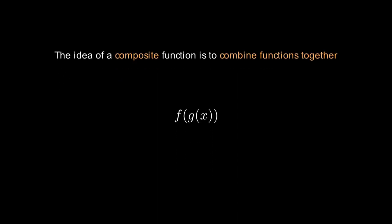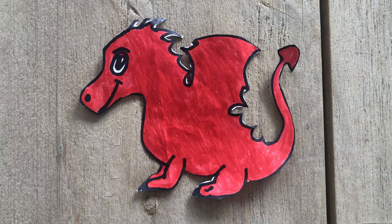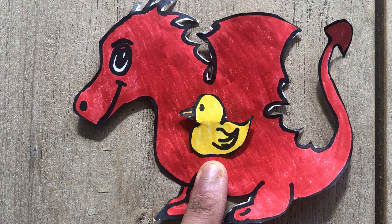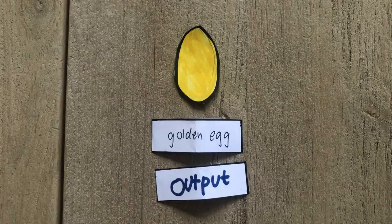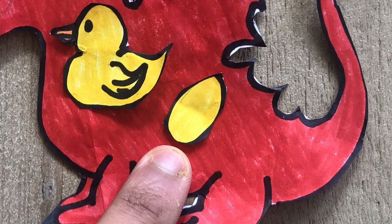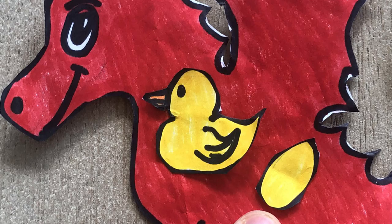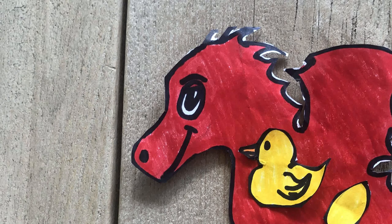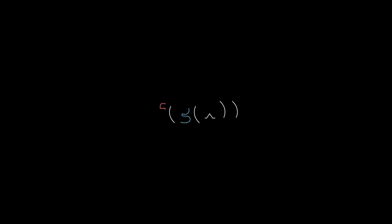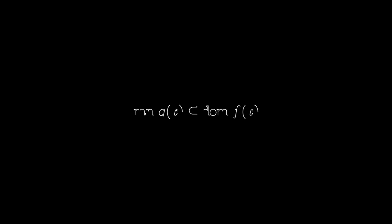We write a composite function like so, where we have some function g(x) inside another function f(x). But you might be asking: what if our dragon cannot digest the duck's eggs? Well, then the duckagon cannot exist. The same applies with functions. Remember how the golden egg represents the output of the duck function? Well, if that output number of the duck function is not a valid input number for the dragon, then the composite function can't exist. More formally speaking, the range of g(x) must be a subset or equal to the domain of f(x).